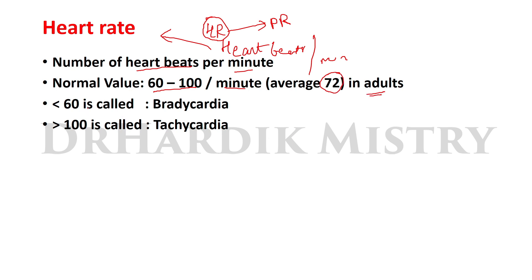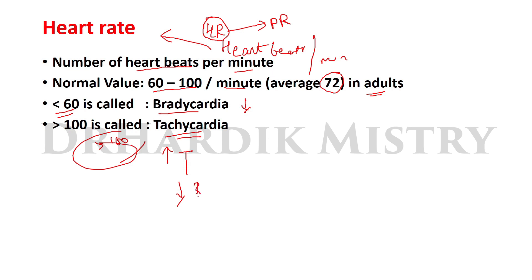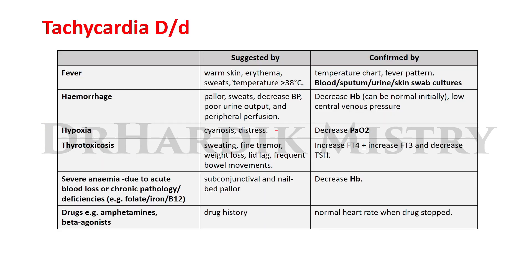When the heart rate is less than 60, it is called bradycardia. When the heart rate is more than 100, it is called tachycardia. Now, the differential diagnosis of tachycardia: when we find tachycardia with warm skin, erythema, sweats, and temperature more than 38 degrees Celsius,